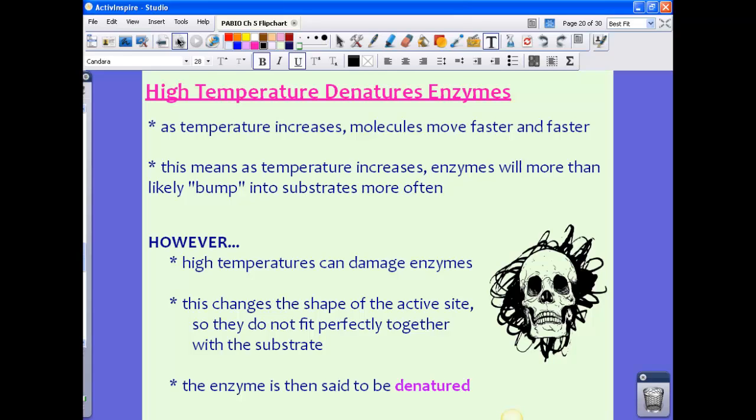Now this means as the temperature increases, enzymes will more than likely bump into substrates more often. And this could be a good thing, because this means that more enzymes that bump into substrates, this means that more enzymes will change those substrates into products. So we're going to get more of the products involved. So it might be a good thing here.